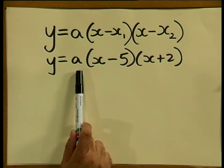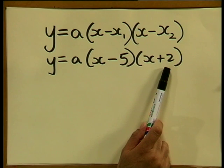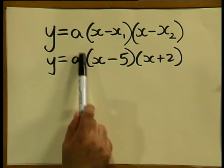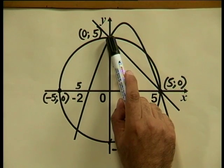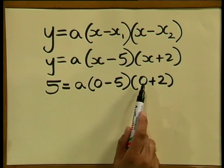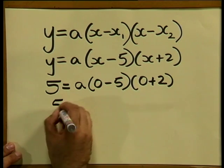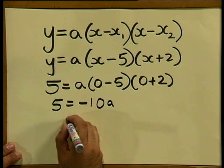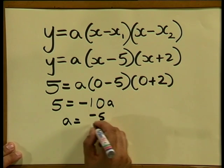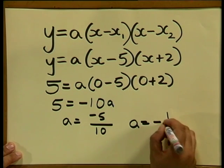Do you think the value of a will be positive or negative? Are there any clues on the diagram? Let's work out a. y equals a times (x minus 5) times (x plus 2). We need a third point to find the value of a, so let's use the point where x equals 0 and y equals 5. Substituting x equals 0 and y equals 5: 5 equals a times (0 minus 5)(0 plus 2), which comes down to 5 equals negative 10a. Therefore a equals negative 5 divided by 10, so a equals negative one half.